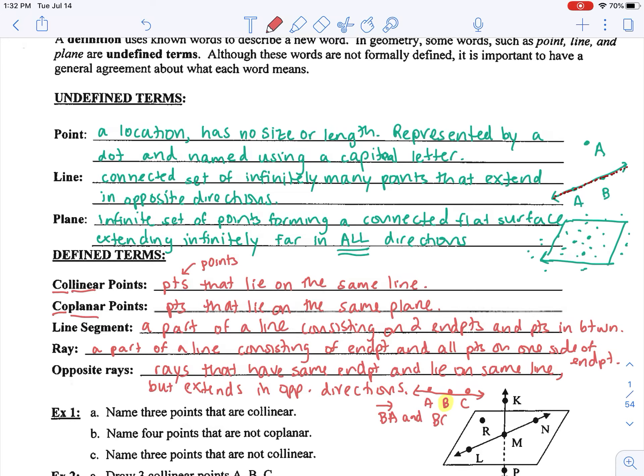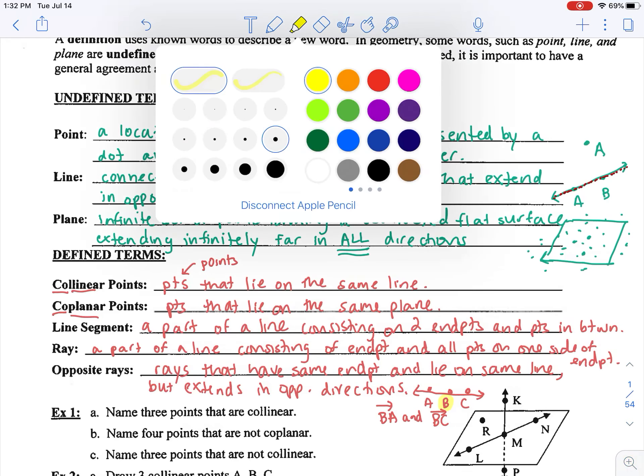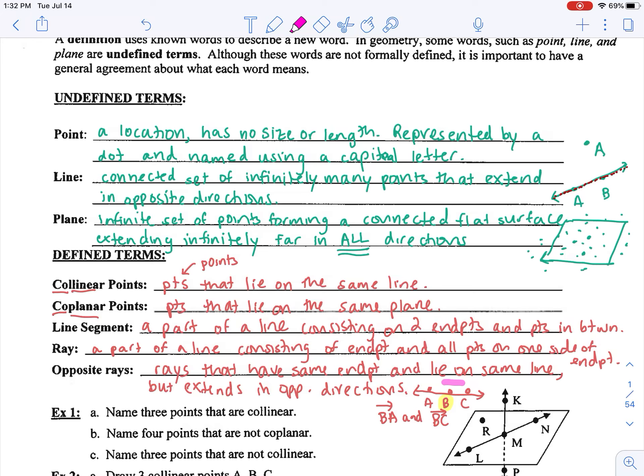And ray, again, you must begin with the common endpoint, ray BC. That's different from ray CB because ray CB, if I highlight it for you, is going in this direction. So that's ray CB and that's different from ray BC. Direction matters for that one.